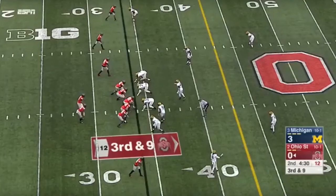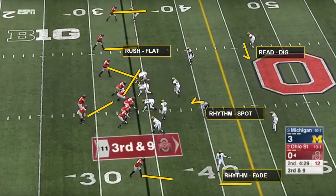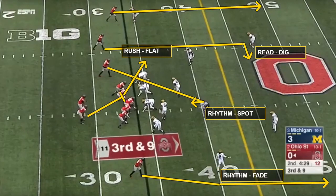This is an example of how we would use the R4 system to progress through a spacing family concept. We would first tell the quarterback to pick the best rhythm route — fader spot — based on the pre-snap read. Next, he would progress to the re-dig, rush flat, then release.